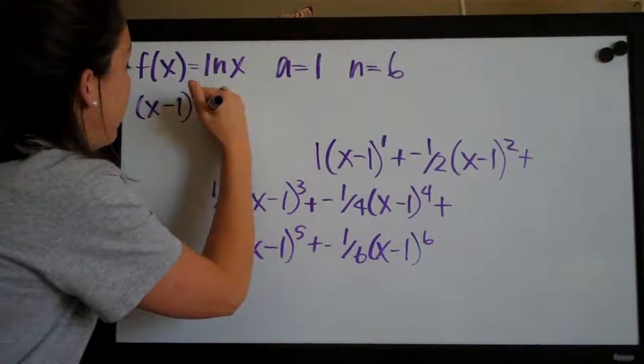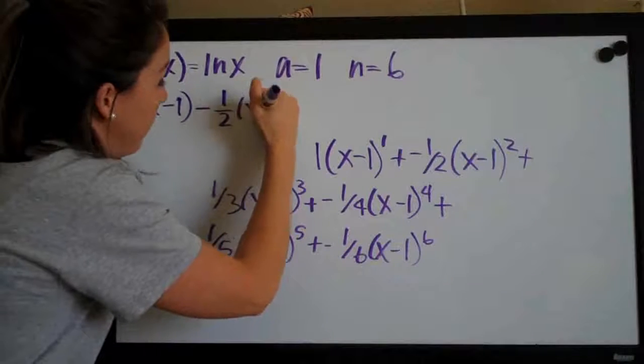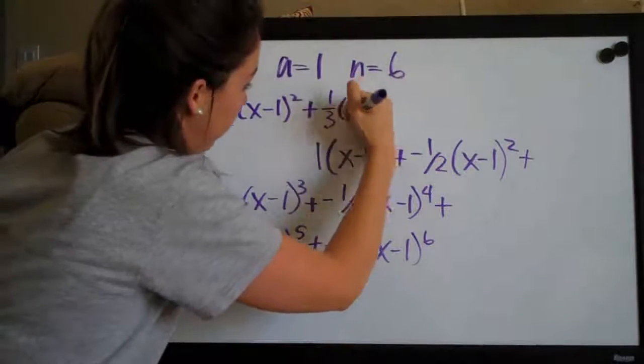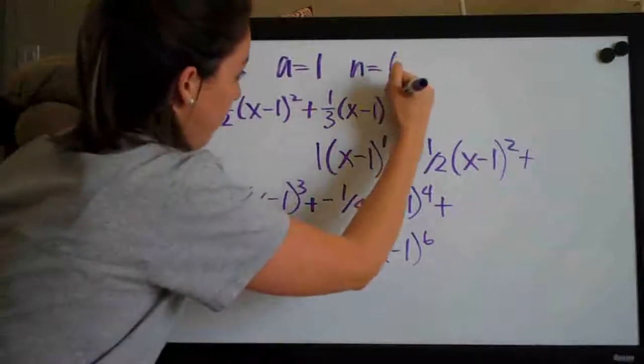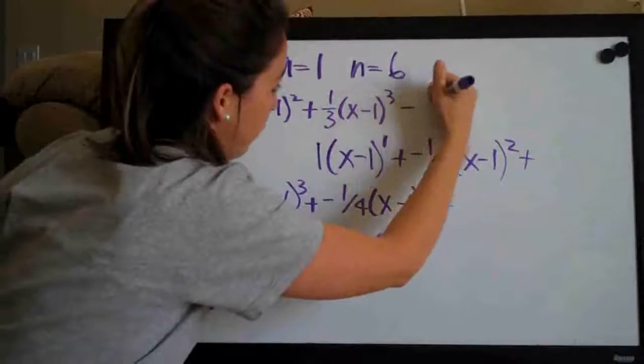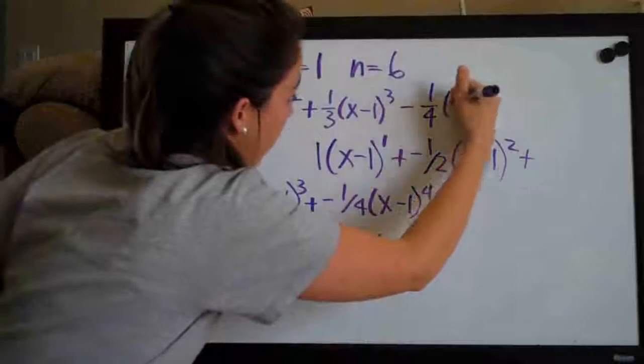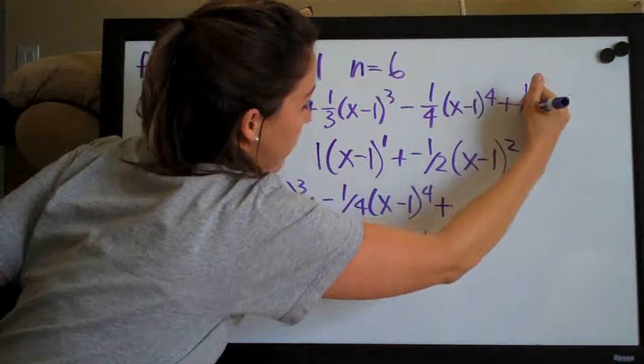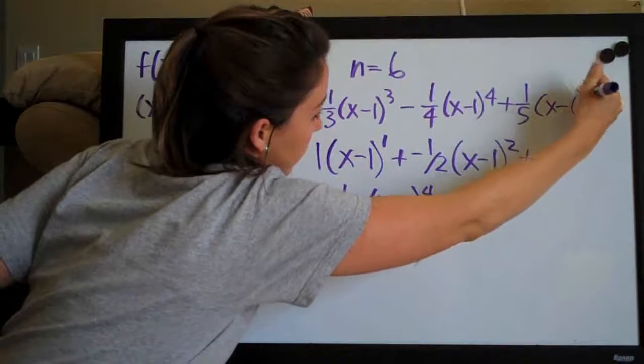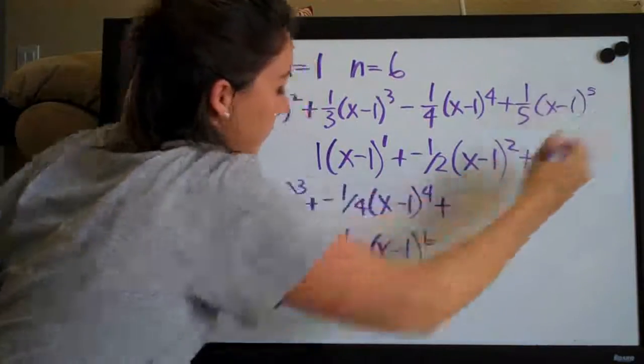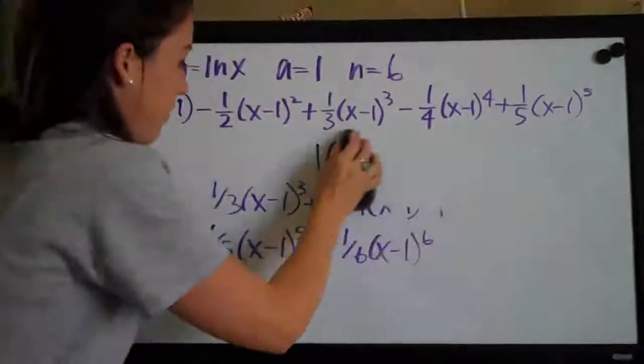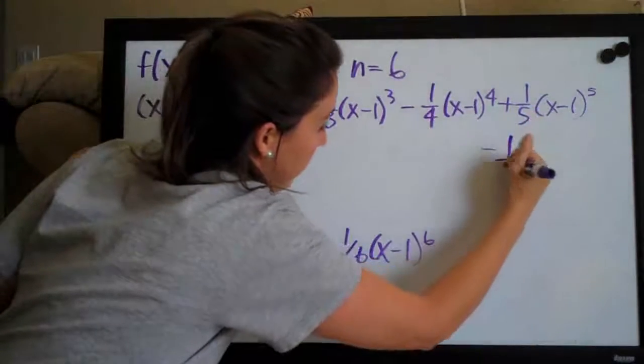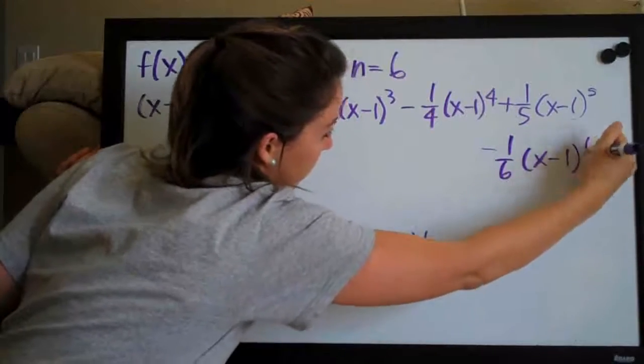Then we'll have minus one-half times x minus one squared plus one-third x minus one to the three minus one-fourth x minus one to the four plus one-fifth x minus one to the five. And then of course we'll have, these things are so long, we've run out of room, minus one-sixth times x minus one to the six.